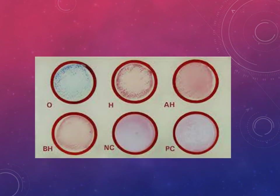In the slide agglutination view, O antigen is blue color, H antigens - TH, AH, BH - are pink colored. We also put one negative control and one positive control to validate the test and check whether the kit is working properly. The test tube method is preferred over the slide method because we get better results and are able to know the titer by putting many dilutions.